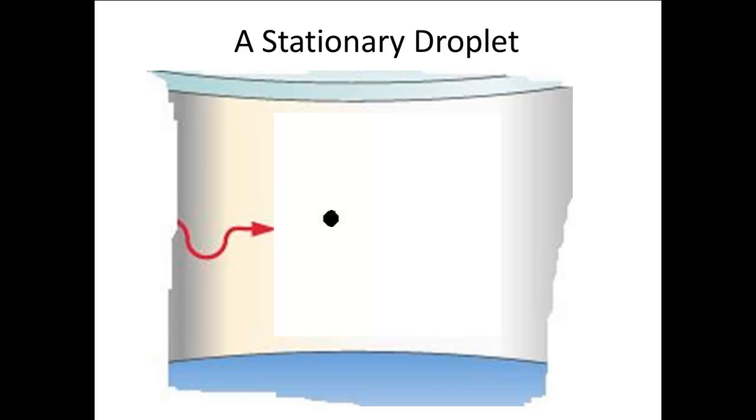Once he had the charged droplets, he looked for one that was stationary in mid-air. This particular droplet had two equal forces acting on it, gravity pulling down and the electric force pulling up. The gravitational force is determined by the mass of the droplet and the gravitational constant G, which is well known. The electric force is dependent on the charge on the droplet and the electric field produced by the charged plates, which can be determined from the charge on the plates, which we can easily measure.